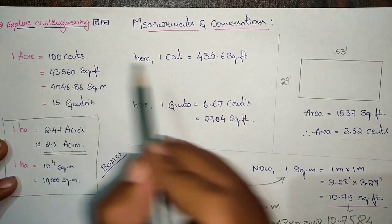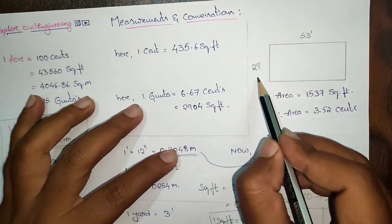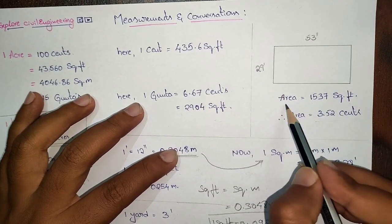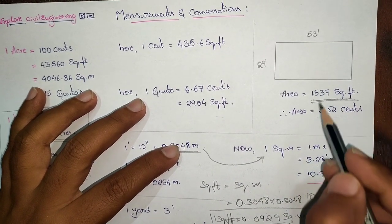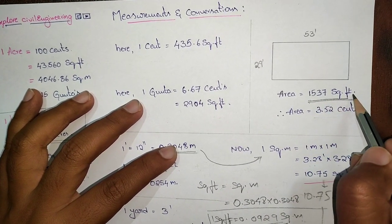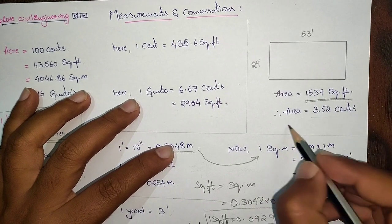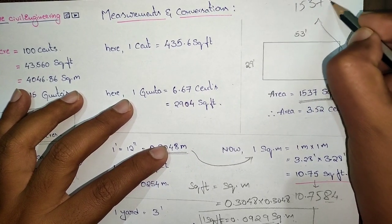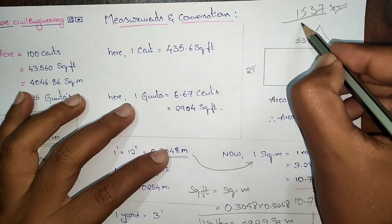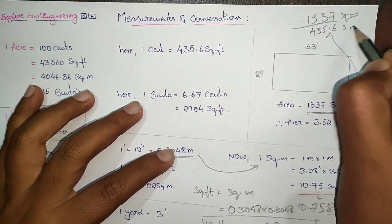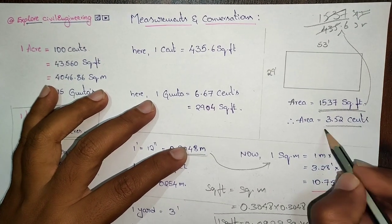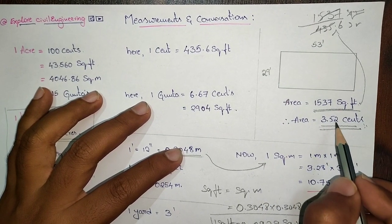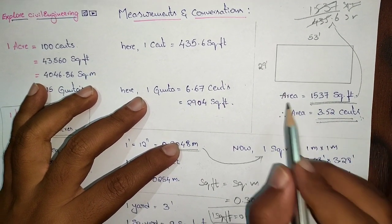Now, for a given area, how to find the area in cents: take a land value of 29 feet by 53 feet, then multiply both values to get an area of 1537 square feet, which comes to 3.52 cents. Given 1537 square feet, divide by 435.6 square feet and we get the area in cents, which is 3.52 cents. This is how to calculate the area in cents.